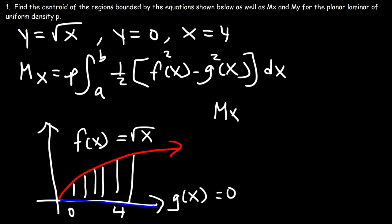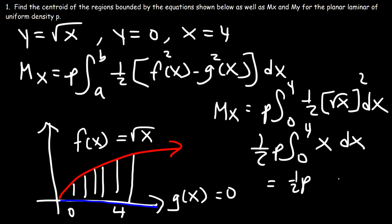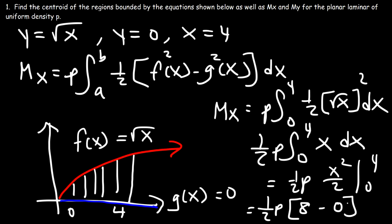To calculate the moment about the x-axis, it's going to be the surface density times the integral from 0 to 4 of one-half times the square root of x squared dx. The square root of x squared is just x, so we have one-half rho times the integral from 0 to 4 of x dx. The antiderivative is x squared over 2 evaluated from 0 to 4. Plugging in 4: 16 over 2 is 8, and half of 8 is 4. So the moment about the x-axis is 4 rho.